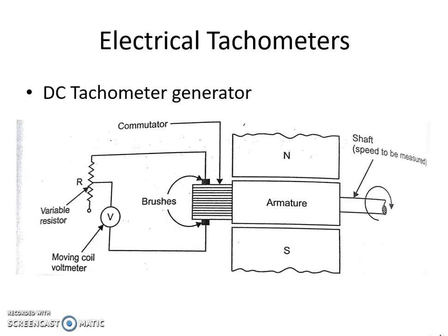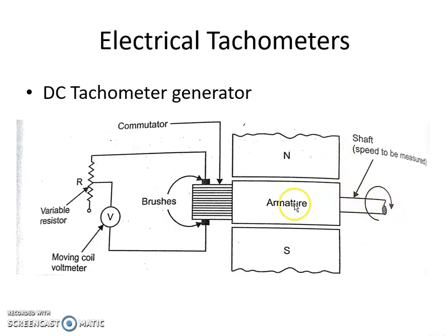This is the diagram of the DC tachometer. It consists of a shaft whose speed is to be measured. The shaft is connected to an armature, and there are brushes on the armature. The armature is kept between the two poles of a permanent magnet, providing constant flux or constant field excitation. When the shaft rotates, the armature also rotates, and EMF will be induced across the brushes. This is connected to a moving coil voltmeter through a variable resistor.